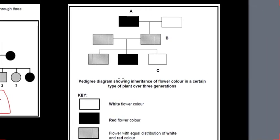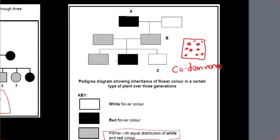This pedigree diagram shows inheritance of flower color in a certain type of plant over three generations. There was a white flower and a red flower that was crossed, and they produced a flower with equal distribution of white and red color. So you're going to have a flower that shows both colors. What kind of dominance is this? This is co-dominance, because both traits are equally dominant, so both alleles are equally dominant and both show up in the phenotype. I hope that helped you, and that is the end of this video.